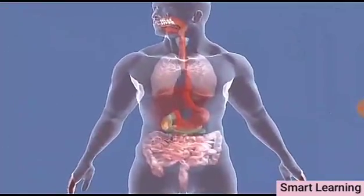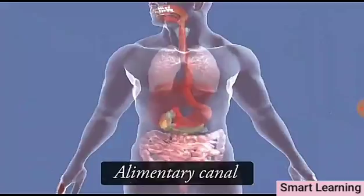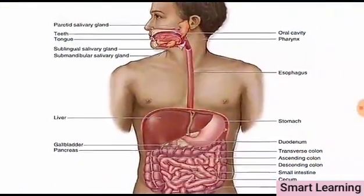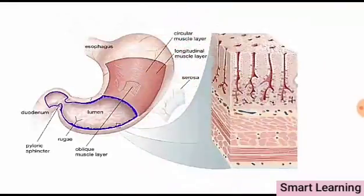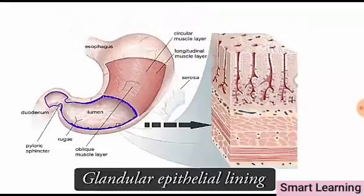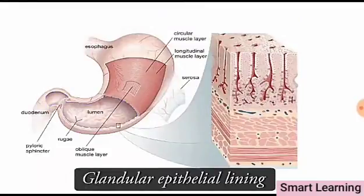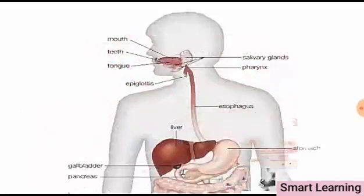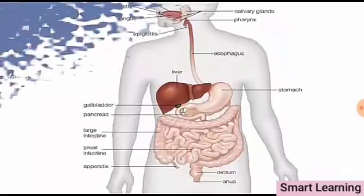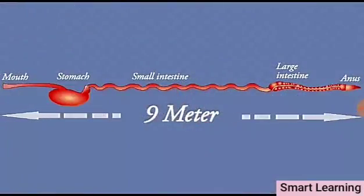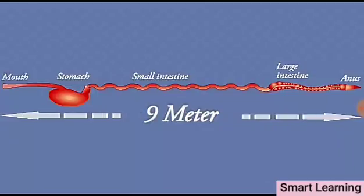The human digestive system consists of an alimentary canal and associated digestive glands. The alimentary canal is a long tube with muscular walls, glandular epithelial lining, and varying diameter. It extends from the mouth to the anus. When uncoiled, the alimentary canal measures nearly 9 meters — a long tube in which the ducts of several digestive glands open to secrete their respective digestive secretions.